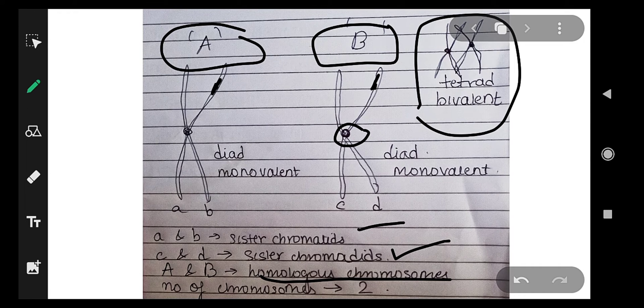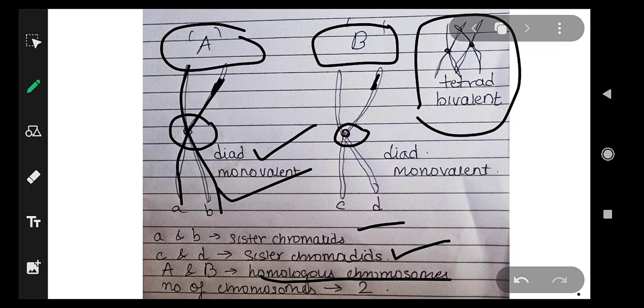Here we can see there are two chromosomes, so there are two centromeres. First of all, here we can see two chromatids—that is why I called it a dyad. We can see one centromere, so we can say it is monovalent. Here also, two chromatids, so dyad, one centromere, so monovalent.